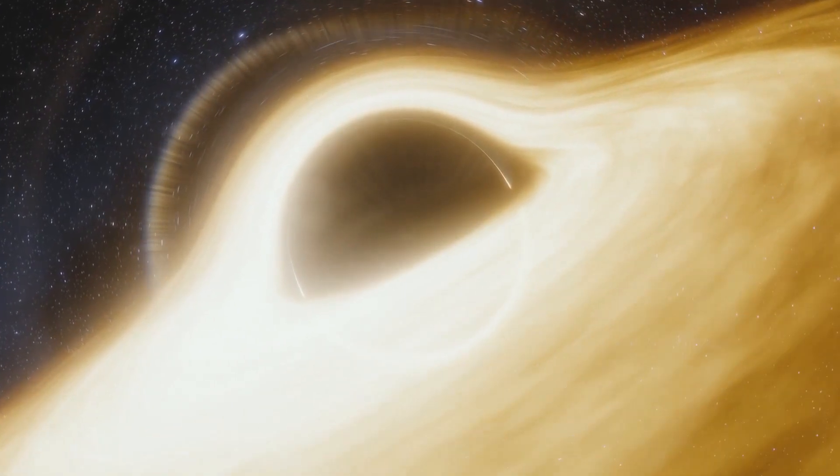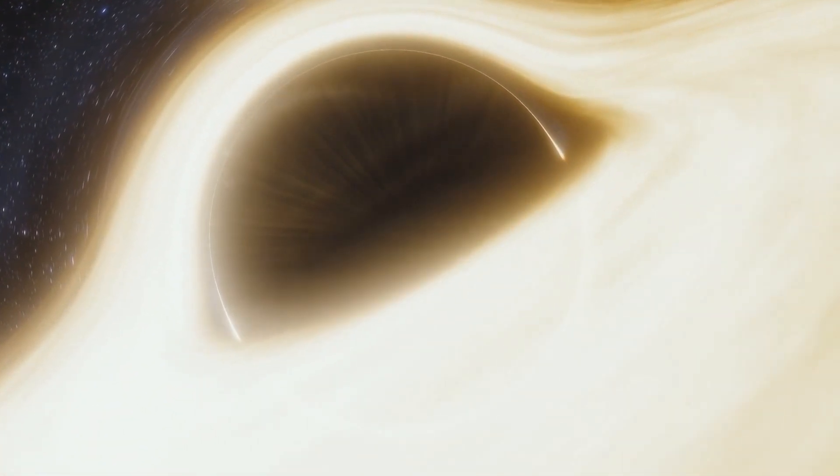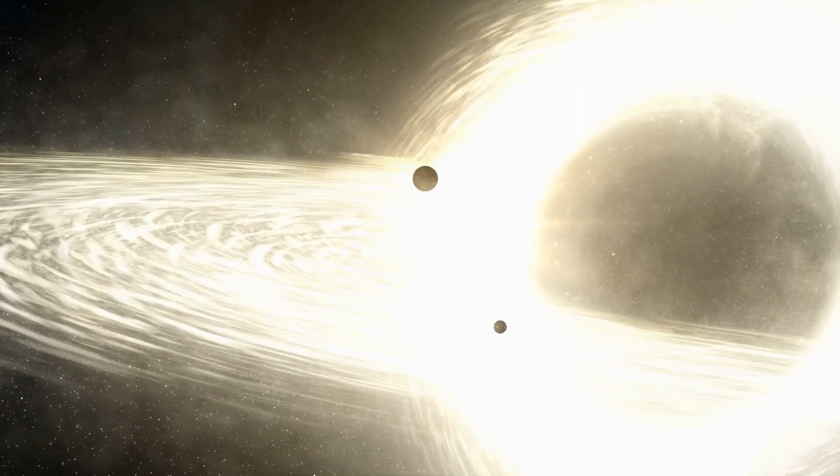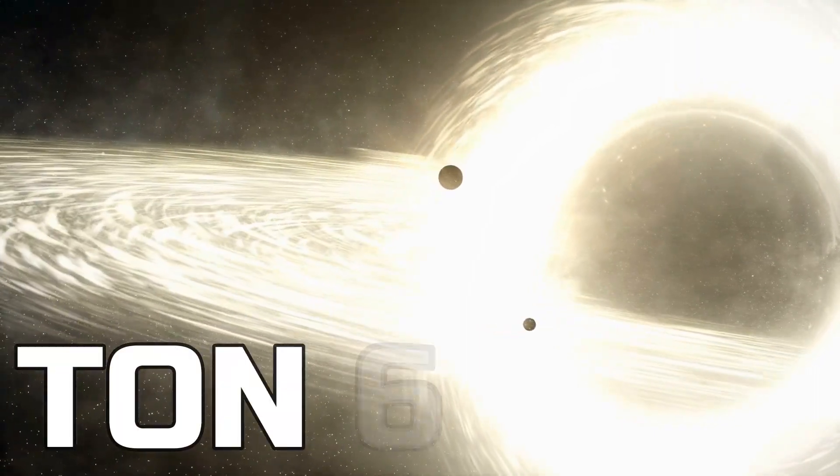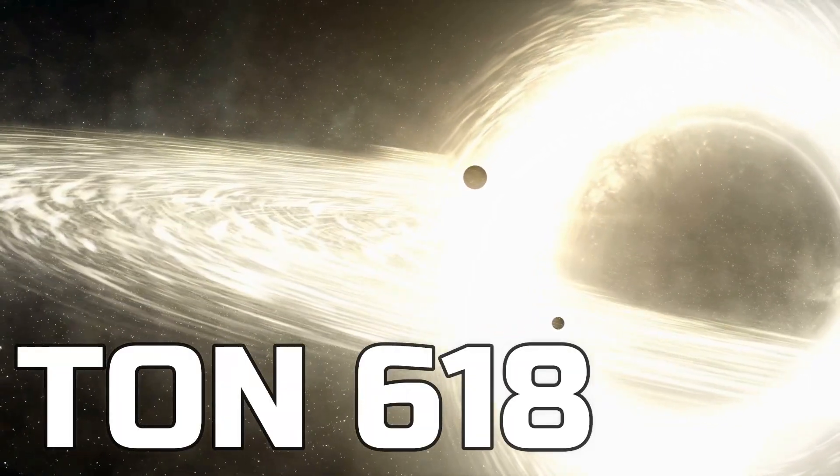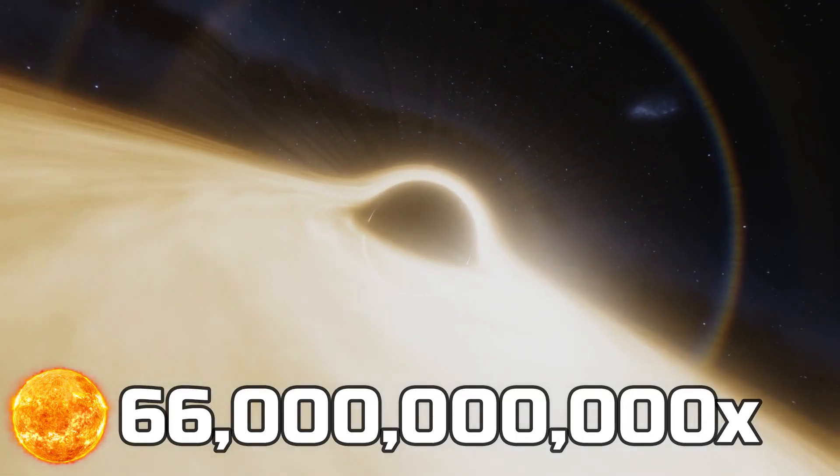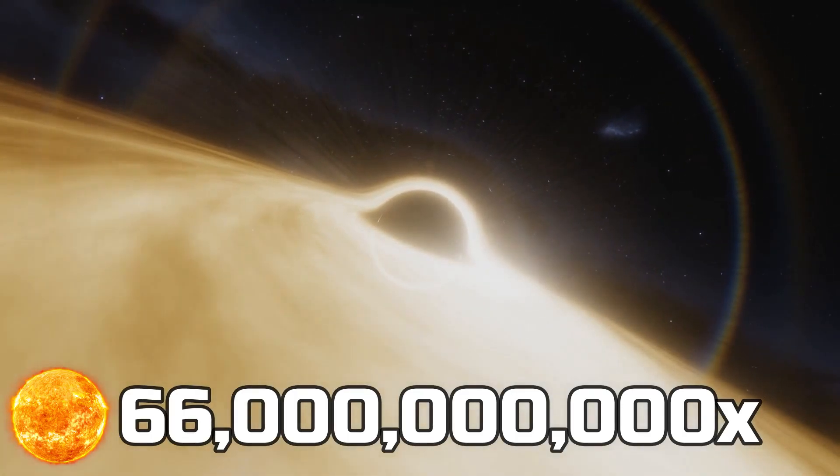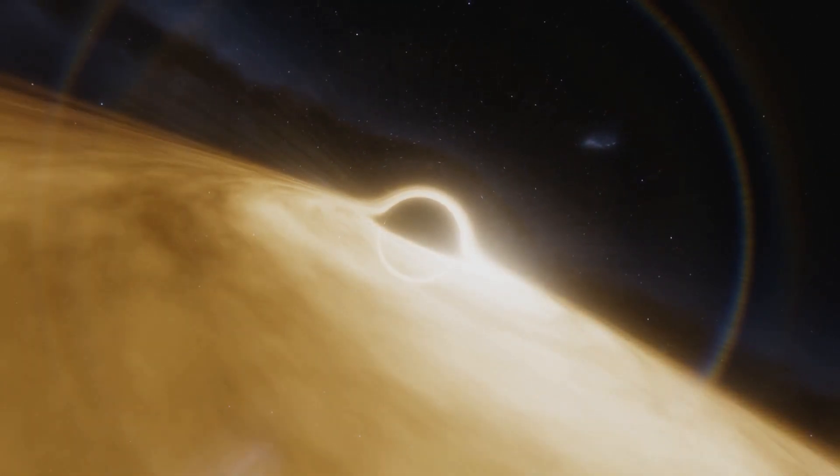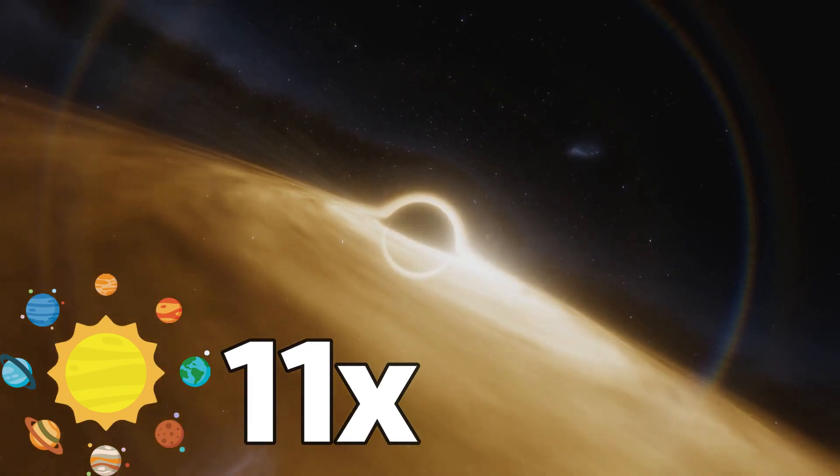But it seems like that this is still not the biggest black hole. The biggest black hole that we've ever found is TON 618. TON 618 is 66 billion times the mass of the Sun, meaning it has a diameter of 11 times the solar system.